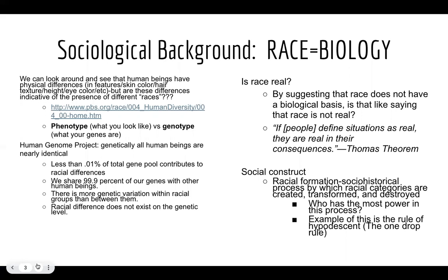This begins with some sociological background. When we look around and see that human beings have physical differences — different facial features, skin color, hair texture, height, eye color — we obviously don't all look alike. But just because we don't look alike, and in some cases look very different, does that really mean that we are different races, that biologically we are different?